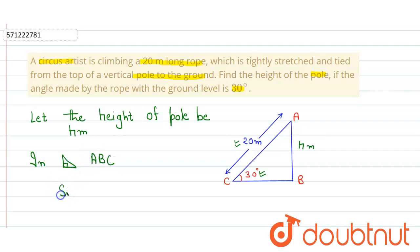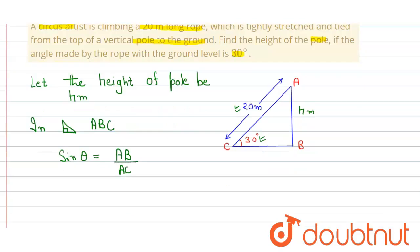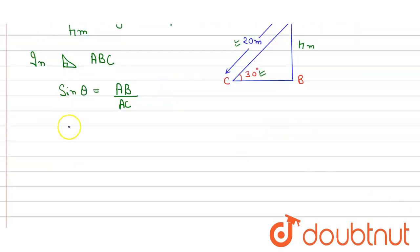Sine theta is equal to AB upon AC. So here we just put the value: sine 30 degrees is equal to AB, which we have to find, upon AC, which is equal to 20.